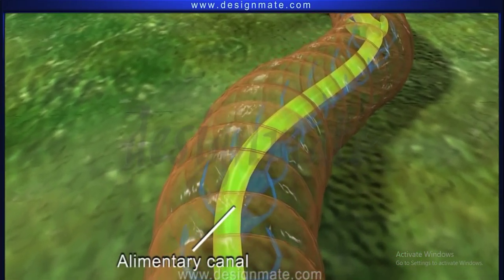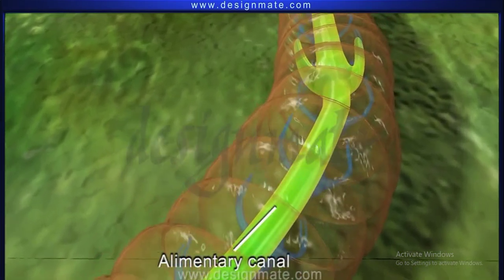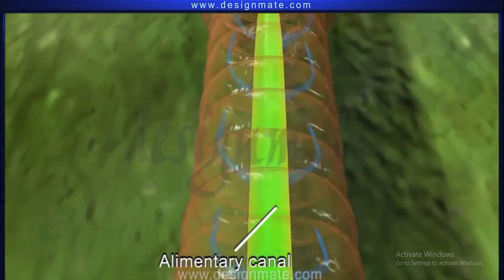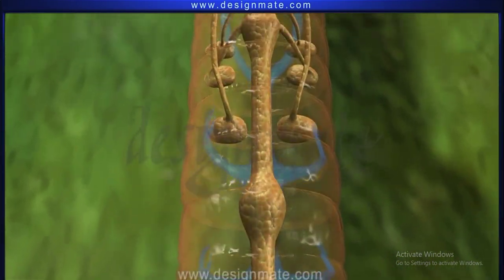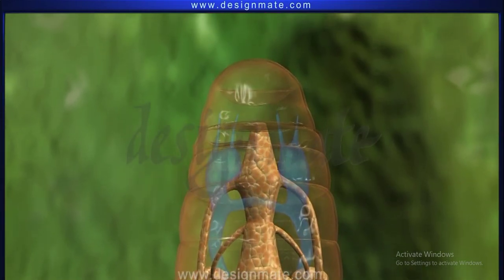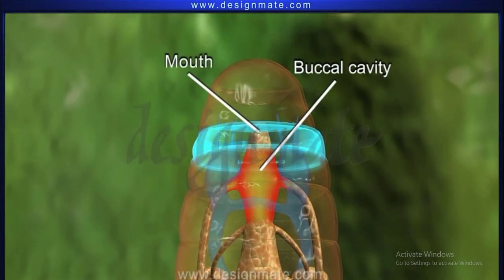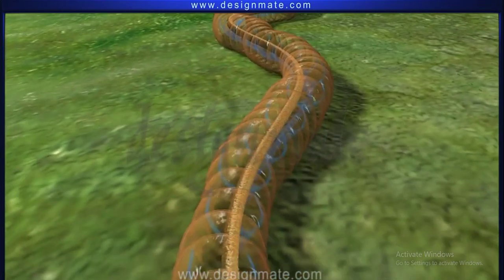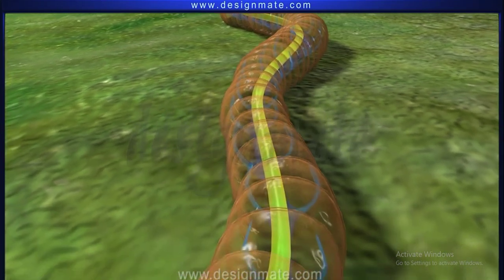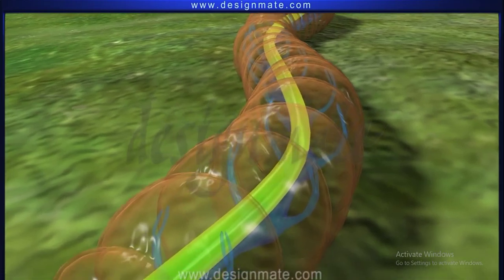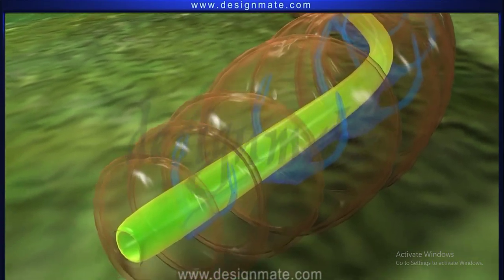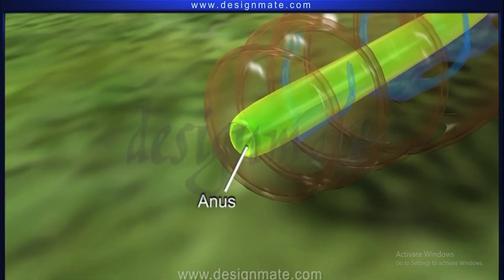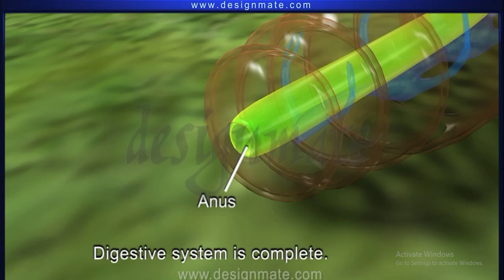The alimentary canal is a straight cylindrical tube running along the length of its body. Located at its anterior end is the mouth which opens into the buccal cavity. The alimentary canal opens outside by a small circular aperture called anus. The digestive system in these animals is thus complete.